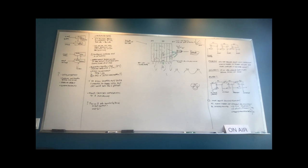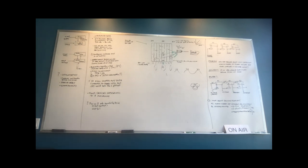It would be nice if head direction cells were like this too — that would be a copacetic result — but they don't appear to be. This also really depends on what your favorite model of grid cells is. If you're a fan of a CAN model, you'd want to incorporate as much as you can in these conjunctive cells. Whereas if you come from an oscillatory interference approach, that has no relevance whatsoever.